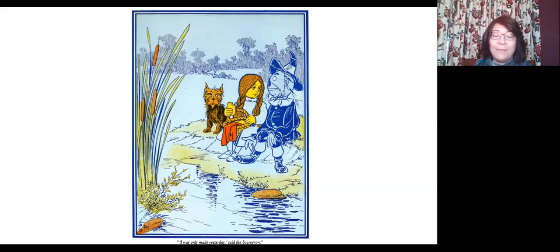Well, Dorothy let Toto carry the basket and they set out once more. There were no fences at all by the roadside now, and the land was rough and untilled. Towards evening, they came to a great forest where the trees grew so big and close together that their branches met over the road of yellow brick. It was almost dark under the trees, for the branches shut out the daylight, but the travelers did not stop and went on into the forest.